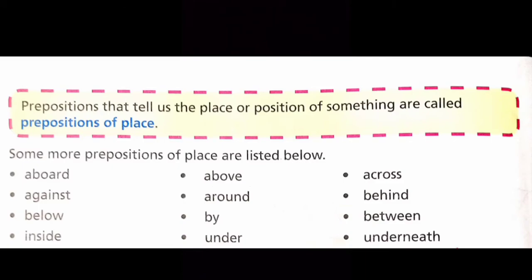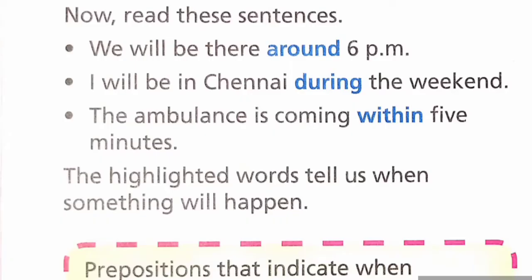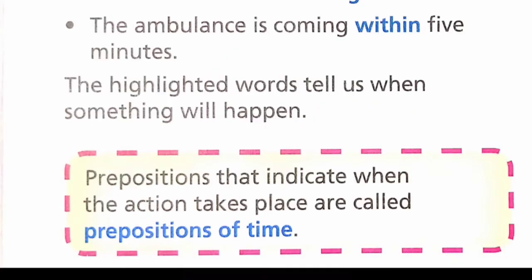Now read these sentences. We will be there around 6 p.m. I will be in Chennai during the weekend. The ambulance is coming within 5 minutes. The highlighted words tell us when something will happen. Prepositions that indicate when the action takes place are called prepositions of time.